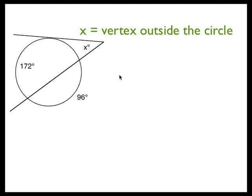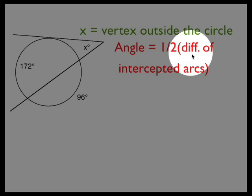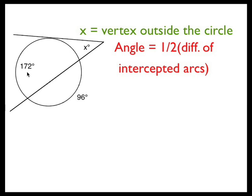Since the vertex is outside of the circle, our rule is that the angle is equal to half the difference of the two intercepted arcs. It's the difference, so it's subtraction.